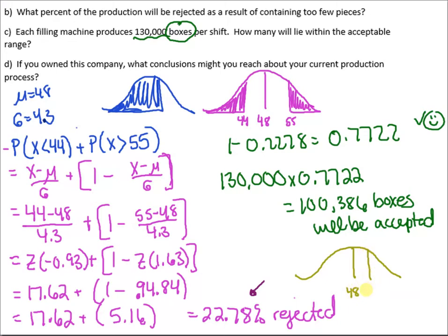And then the first standard deviation away from the mean is 52.3. Two standard deviations away from the mean, 56.6.